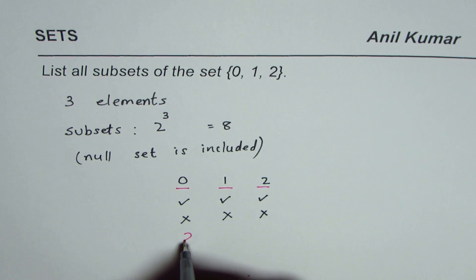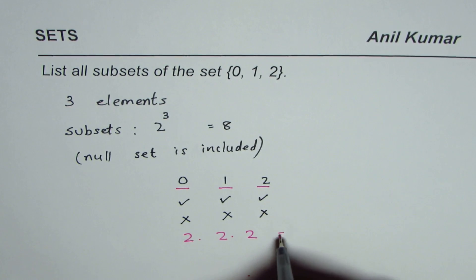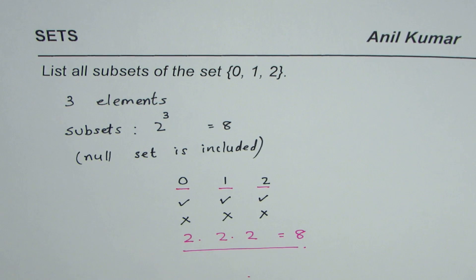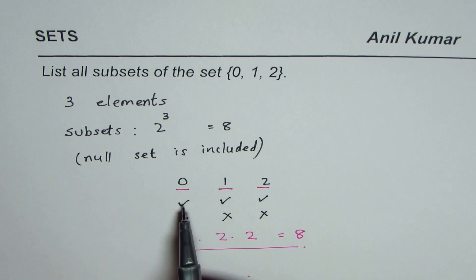There are two options: 2 times 2 times 2, which is 8. That is the fundamental counting principle from where we get this solution. As you can see, there is an option that we need not select any one of them, so that is the null set.